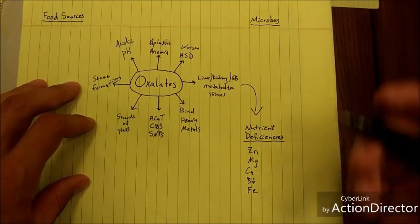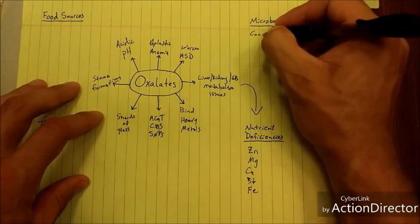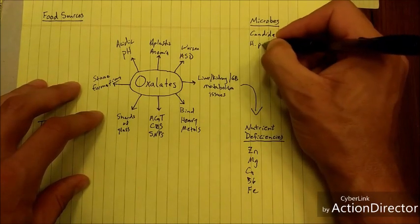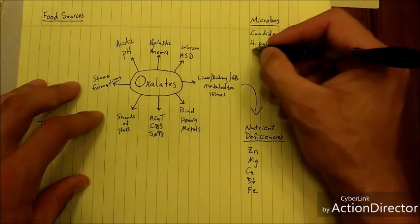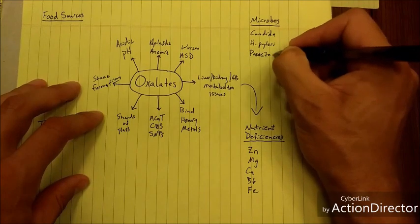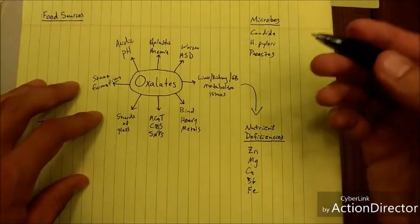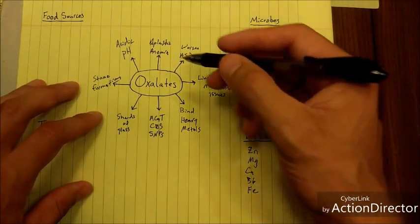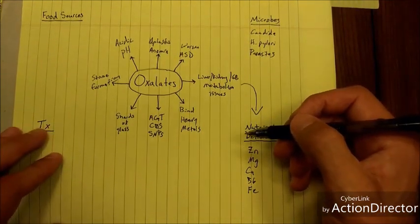What else can increase oxalates? Certain microbes or infections. So candida is one that can increase oxalate production. Helicobacter pylori increases oxalate production. And parasites can result in increased oxalate loads in the body. So gut dysbiosis or bacterial infection or fungal infection can increase oxalate load and potentially contribute to these other symptoms or findings.